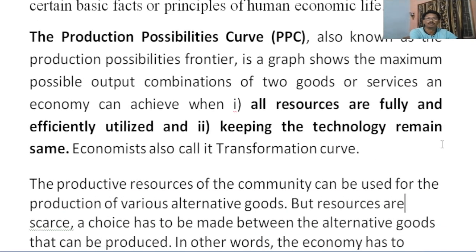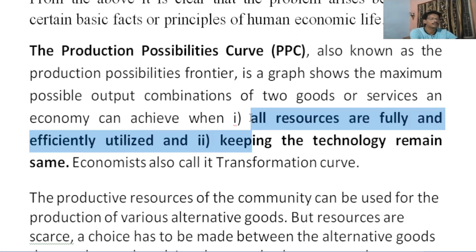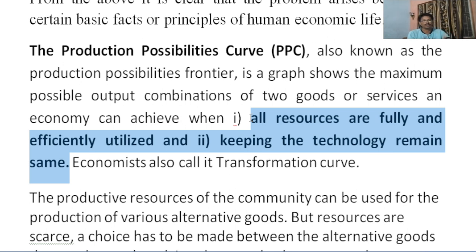When producers are making choices, they always consider possibilities relating to goods or services they are going to produce. The production possibility curve is a graph showing the maximum possible output combinations of two goods or services an economy can achieve, given two assumptions: first, all resources must be fully and efficiently utilized; and second, technology used must remain the same throughout the production process.